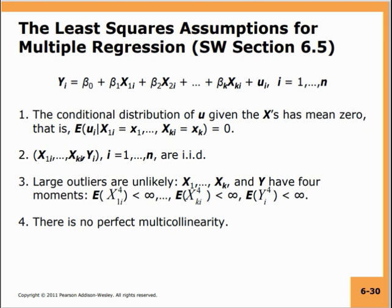The first assumption is that the conditional distribution of u given x has mean zero. Basically, the expected value of u given x1 equals x1, x2 equals x2, and xk equals xk is zero. This is very similar to simple regression where we said E[u|x]=0. We are trying to build a regression model where on average the errors will be zero — the positive errors and negative errors will cancel each other out.